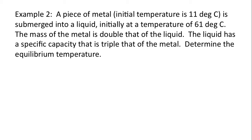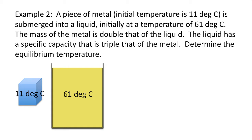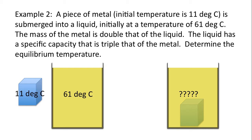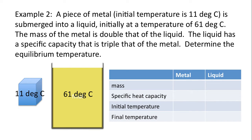For Example 2: a piece of metal at an initial temperature of 11 degrees Celsius is submerged into a liquid at 61 degrees Celsius. The mass of the metal is double that of the liquid, and the liquid has a specific heat capacity triple that of the metal. We need to determine the equilibrium temperature. When you put a cold object into a warm liquid, the overall temperature will decrease, so the answer should be somewhere between 11 and 61 degrees Celsius.